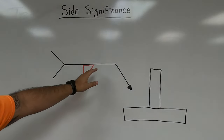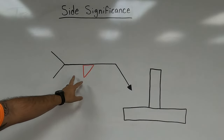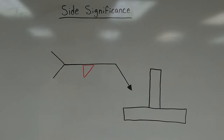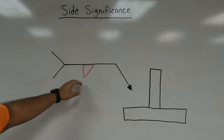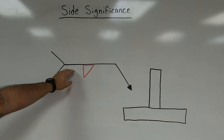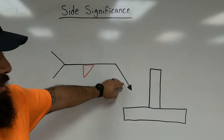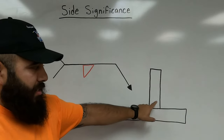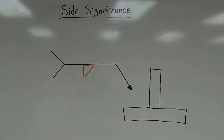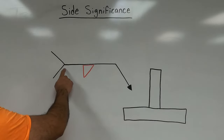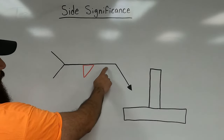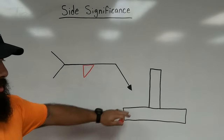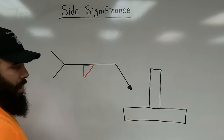With a fillet weld on the arrow side, determining where to deposit the weld is straightforward: simply follow the reference line to wherever it's pointing. Wherever it points on the joint is where the weld goes. In this example, we follow the reference line down — it's pointing to this side of the T-joint, so that's where the fillet weld is deposited.